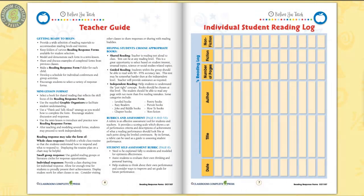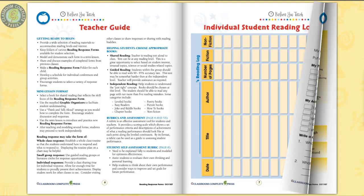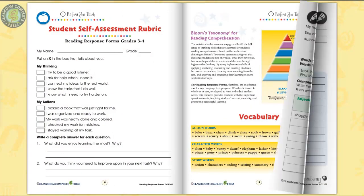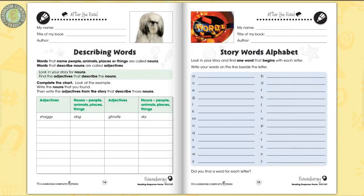Sixty pages of content within six chapters make up the bulk of this unit. We also include a reading log, a self-assessment rubric, and a vocabulary list. Every chapter follows the six levels of thinking from Bloom's Taxonomy.